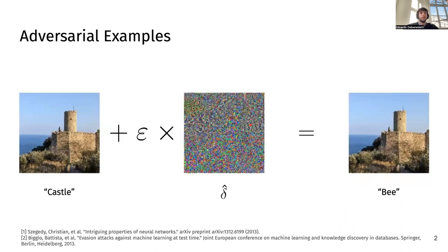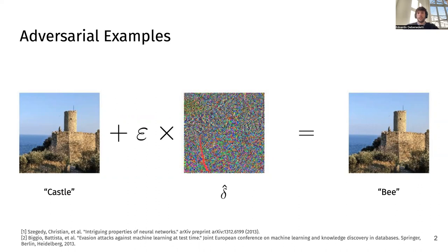As many of you may already know, machine learning models are vulnerable to the so-called adversarial examples — images that are initially classified correctly, like this one of a castle, to which we add a crafted perturbation that is usually considered imperceptible, so that the model misclassifies the image. For instance, the image of the castle is misclassified as a B. We consider the perturbation to be imperceptible and measure this imperceptibility using LP norms, usually L2 or L-infinity.